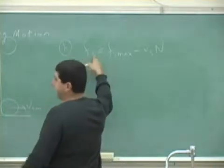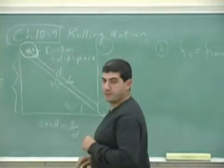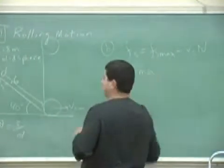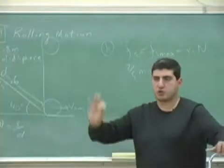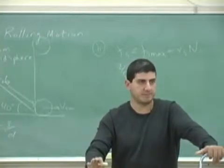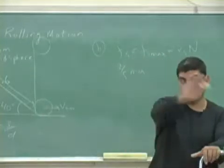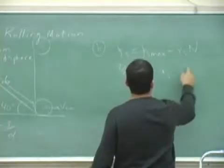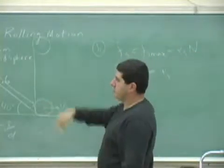So put the fact that Fs equals two-fifths M A — that's the general equation. In order for this object to roll, the Fs on it must equal two-fifths M A. And when it's on the verge of slipping, Fs is also equal to mu s times N. So you set the two equal to each other, and N is M G cos theta.